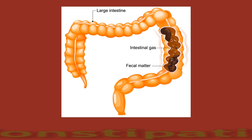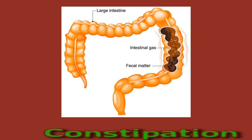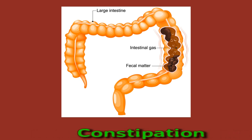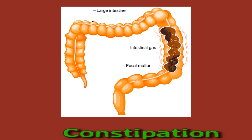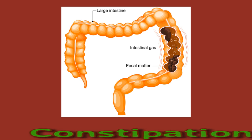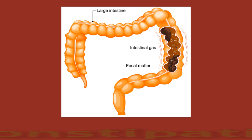Constipation occurs when a person cannot pass a stool, passes hard stools, or passes stools fewer than three times a week. It may occur due to limited exercise, fiber, or fluids. Certain medications or IBS can also cause constipation. People may treat constipation by improving their diet, exercising regularly, and increasing fluid intake. The main symptoms are difficulty passing stools and pain in the abdomen.